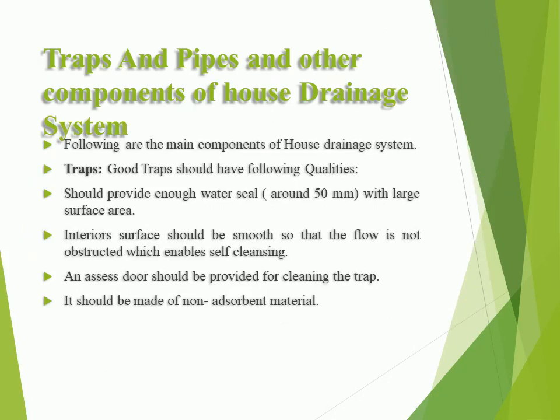Traps and pipes and other components of the house drainage system. Good traps should have the following qualities: they should provide enough water seal, around 50 mm, with a large surface area. The interior surface should be smooth so that flow is not obstructed, enabling self-cleansing. An access door should be provided for cleaning the trap. It should be made of non-absorbent material.